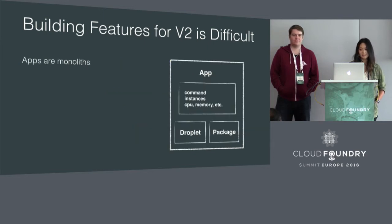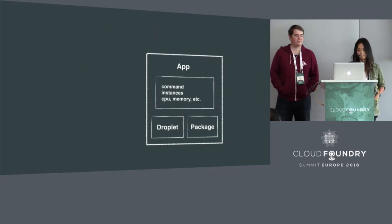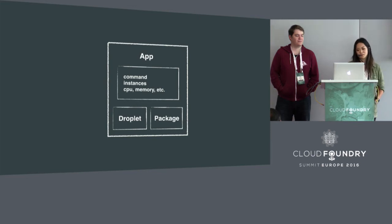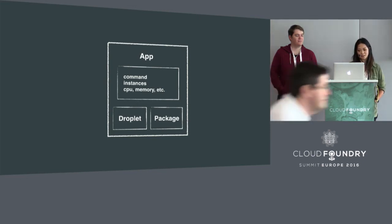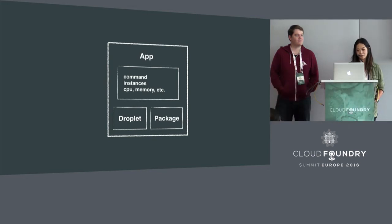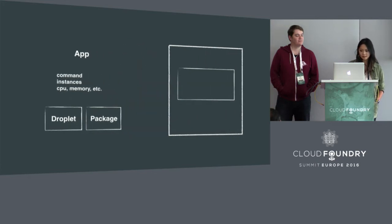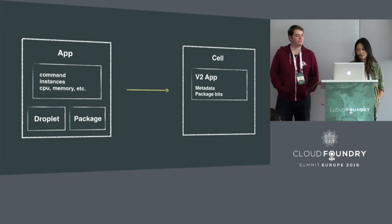In addition to that, the v2 app is a monolith. The user defines a configuration like a start command, CPU, a number of instances, and memory. They have a package, which is the source code and the compiled bits, which we call a droplet. And when the user wants to start the app, the package bits and the app metadata are downloaded into a container and run. This is what we call the v2 app.